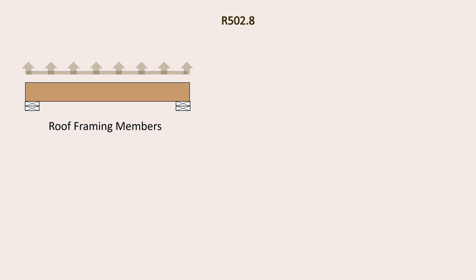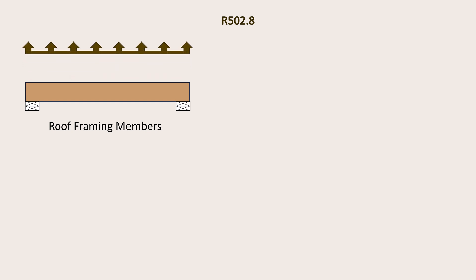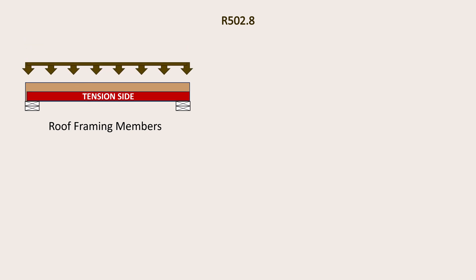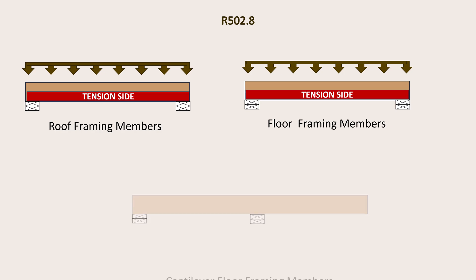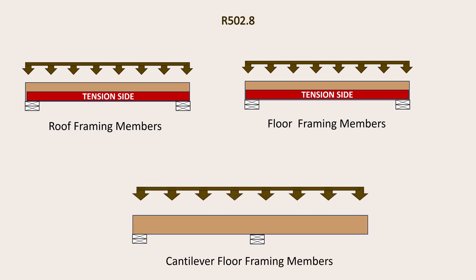For roof framing members that are likely to experience wind uplift and therefore end up with net upward bending, the tension side will be the top part of the beam under net uplift or the bottom of the beam under vertical gravity loads. For floor members supported on two supports at the ends, such as joists, headers, and beams, the tension side is the bottom part of the beam. For cantilever members supporting floor loads, the upper part is the tension side.